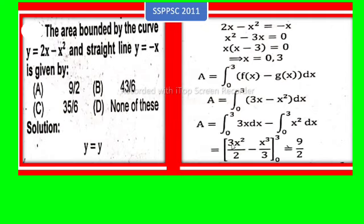27 times 3 is 81, minus 2 times 27 is 54, so 81 minus 54. After simplification we get 9 divided by 2. So option A is correct, that is 9 divided by 2.